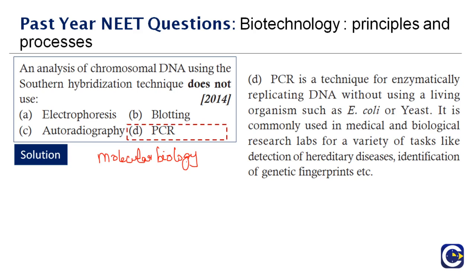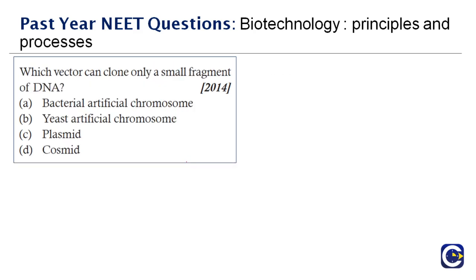Next question: which vector can clone only a small fragment of DNA? The correct answer is option C — plasmid. Plasmids are extra-chromosomal small circular DNA strands that carry extra-chromosomal genes in bacteria and sometimes fungi. They replicate independently. Well-known plasmid vectors available commercially include pBR322 and pUC18.